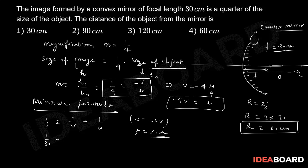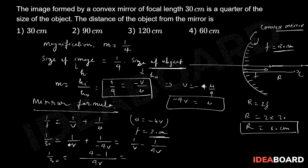So, 1 upon 30 equals 1 upon v plus 1 upon u. Since u equals minus 4v, this becomes 1 upon v minus 1 upon 4v. Taking the LCM gives 4v in the denominator, and 4 minus 1 equals 3, so this is 3 by 4v. Solving: 3 by 4v equals 1 upon 30, so v equals 90 divided by 4 centimeters.